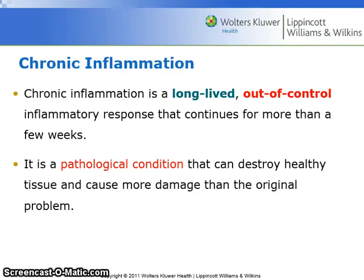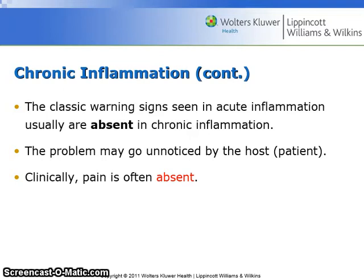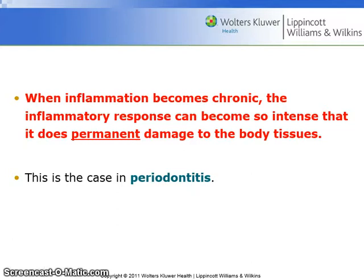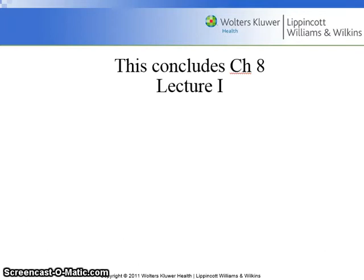Chronic inflammation is a long-lived, out-of-control inflammatory response that continues for more than a few weeks. It is a pathological condition that can destroy healthy tissue and cause more damage than the original problem. The classic warning signs seen in acute inflammation usually are absent in chronic inflammation; the problem may go unnoticed by the patient, and clinically, pain is absent. Chronic inflammation occurs because the body is unable to rid itself of the invading organisms, which are persistent and stimulate an exaggerated immune response. When inflammation becomes chronic, the inflammatory response can become so intense that it does permanent damage to the body tissues — this is the case in periodontitis. This concludes Chapter 8, Lecture 1.